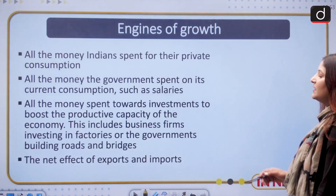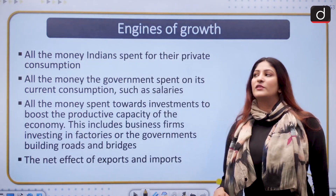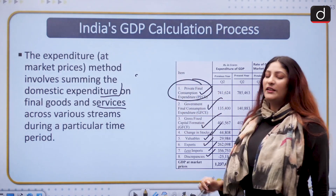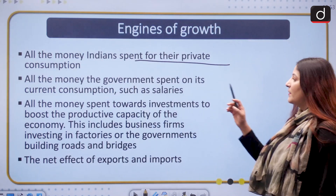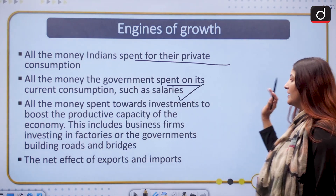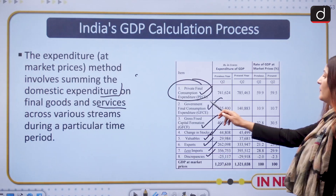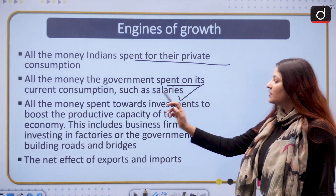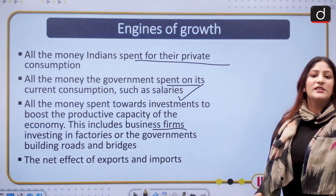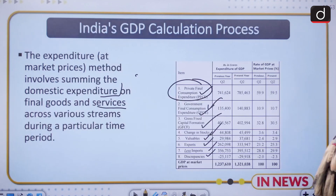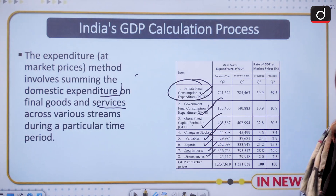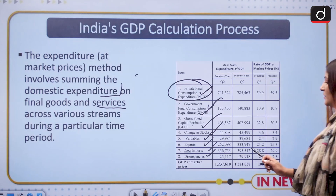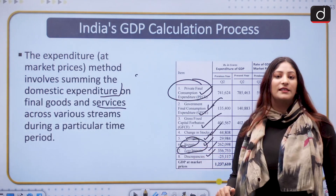Now let's talk about the different engines of growth that India seeks to achieve. First is all the money Indians spend for private consumption — this is private final consumption expenditure. Next is all the money that government spends on current consumption such as salaries — this is government final consumption expenditure. Then comes all the money spent towards investment to boost the productive capacity of the economy, including business firms investing in factories, government buildings, roads and bridges — this is gross fixed capital formation. And then we have the net effect of exports minus imports, which gives us net exports.